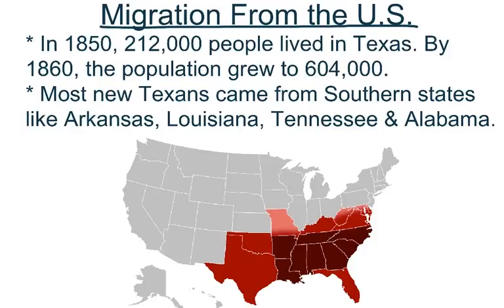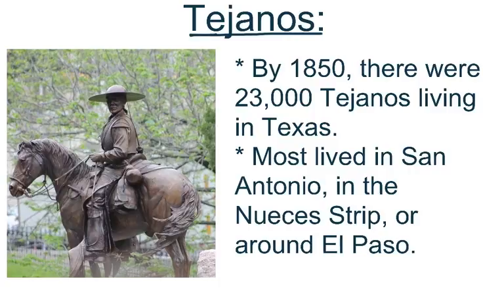Most Texans were coming from the southern states like Arkansas, Louisiana, Tennessee, and Alabama. As you can see on these maps, they were coming to Texas for all the opportunities it had to offer with its land. Basically, all of these people were migrating from other parts of the U.S. to Texas, trying to fulfill their belief in manifest destiny.